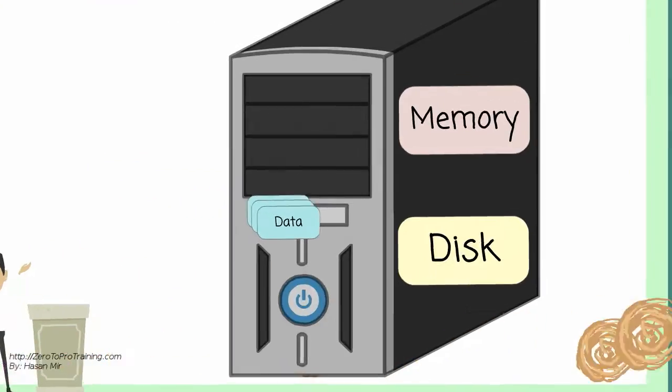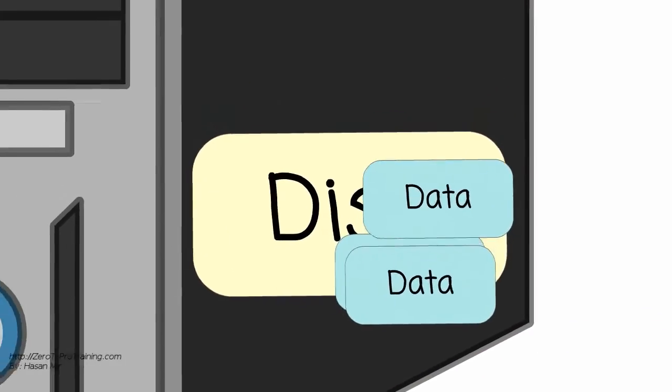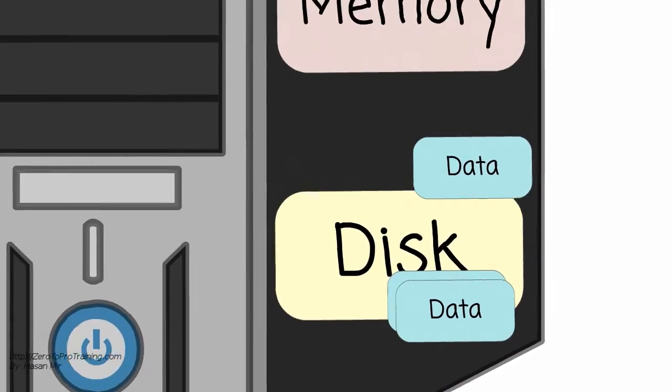In case of regular computers, all the data resides on disks. Only the piece of data that needs to be retrieved or that is likely to be retrieved is moved from the disk to the memory.